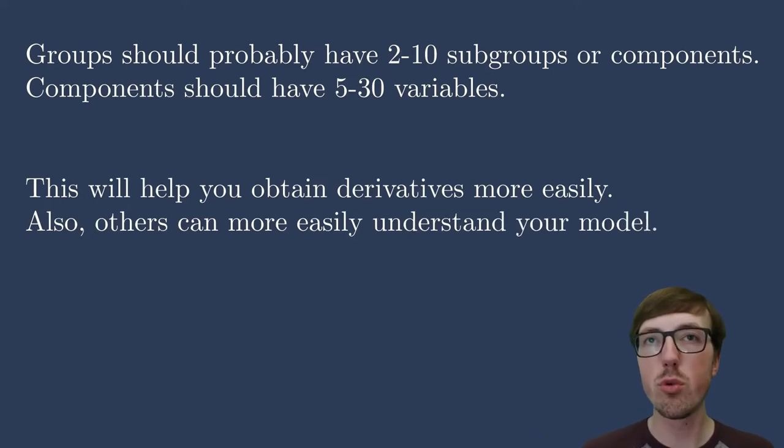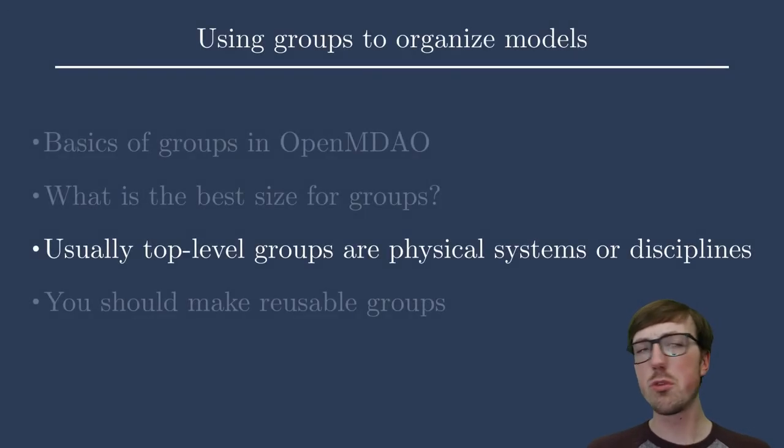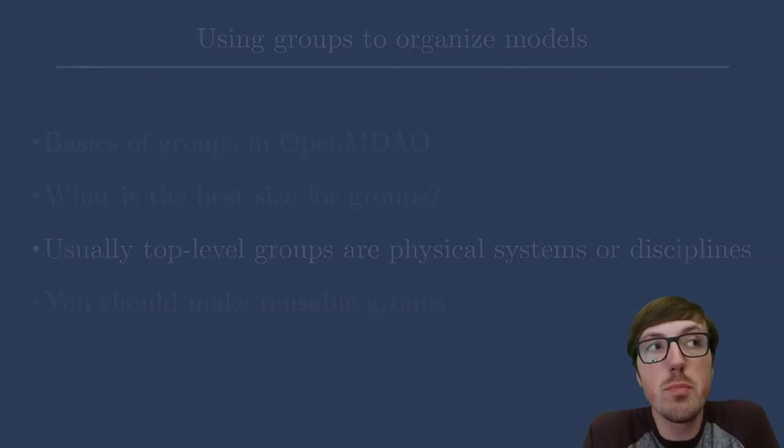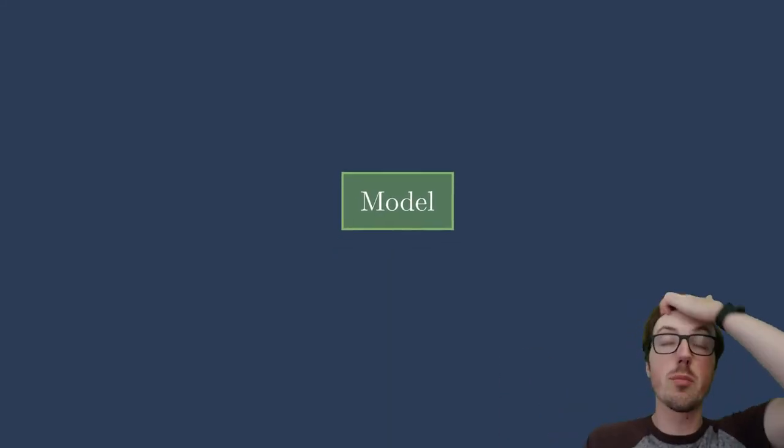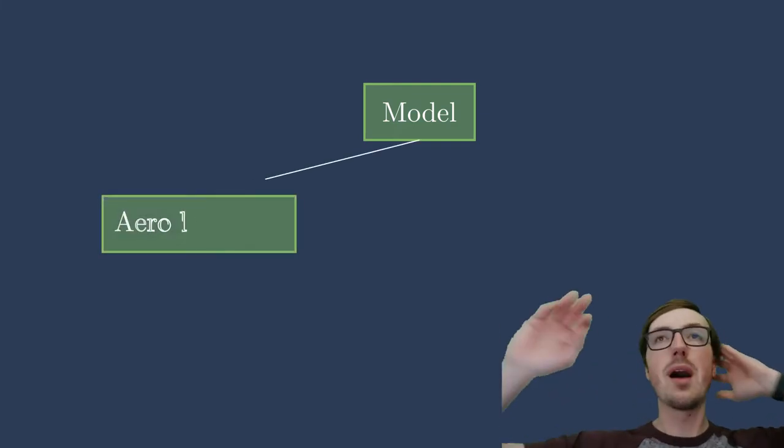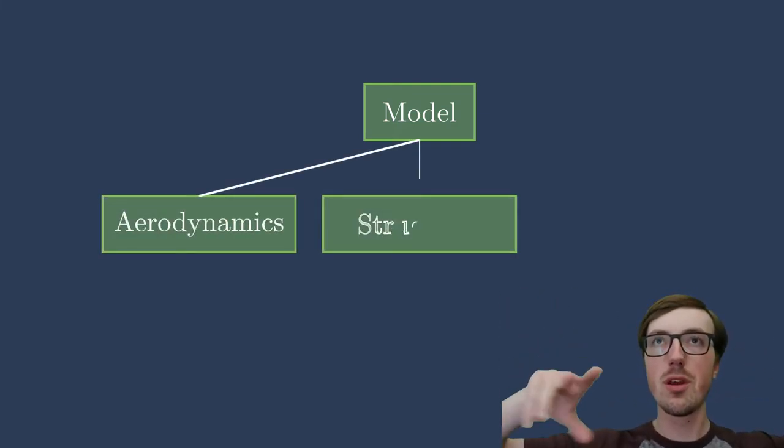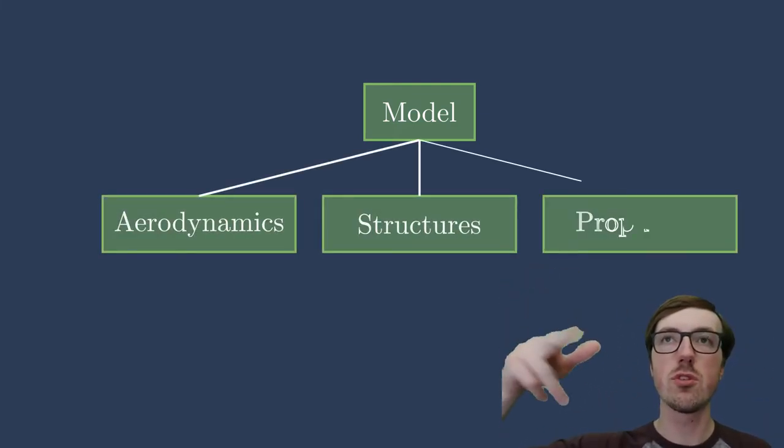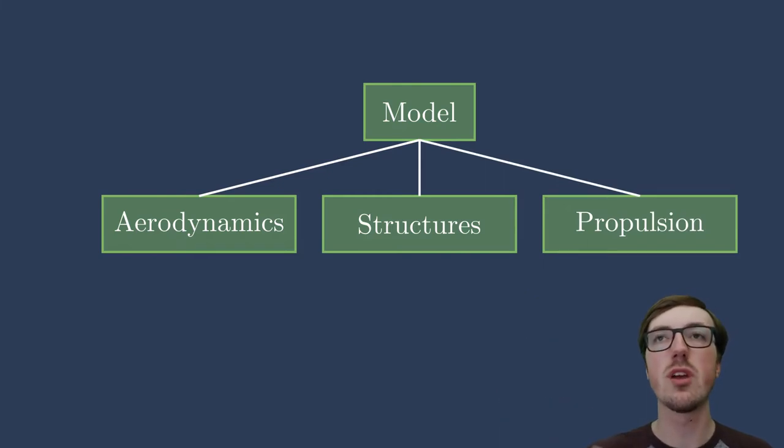Now let me walk through a few examples here of what I mean by groups. You may be thinking, should a discipline always be a group, or should a physical system be a group? That's a great place to start. I really like starting there. So I say that top level groups should be maybe subsystems or disciplinary models. Here's an example. We have a model. We're showing groups in green here. Then we have aerodynamics, structures, and propulsion. These are those top level groups. Maybe here you're doing an aerostructural propulsive analysis of an aircraft.